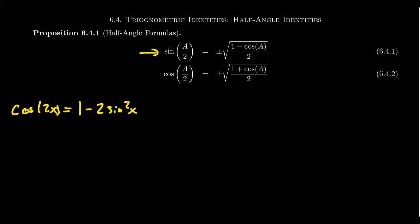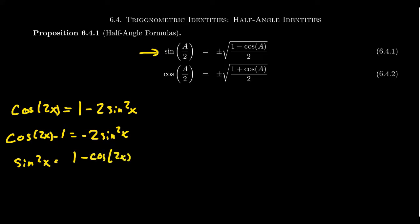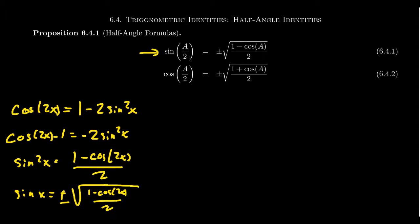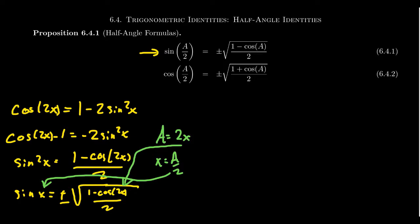Starting with cosine of 2x = 1 minus 2 sine squared x, subtract 1 from both sides: cosine of 2x minus 1 equals negative 2 sine squared x. Divide both sides by negative 2: sine squared x equals 1 minus cosine of 2x, all over 2. Take the square root of both sides: sine of x equals plus or minus the square root of (1 minus cosine 2x) over 2. Then observe that a equals 2x, so x equals a over 2. Substituting gives us the half-angle identity for sine.